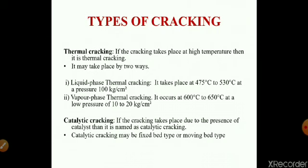Volatile liquid fuels like kerosene are cracked through vapor phase thermal cracking. In this method, the oil is heated to a temperature of about 600 to 650 degrees Celsius at a low pressure of 10 to 20 kg/cm². The yield of gasoline is 50 to 60%.